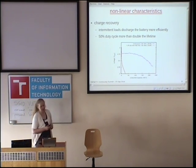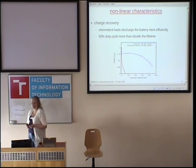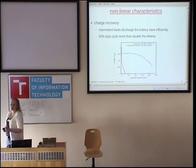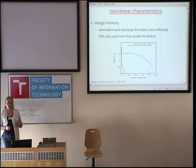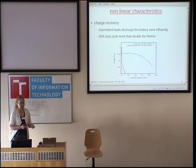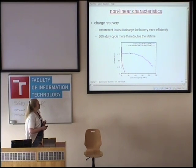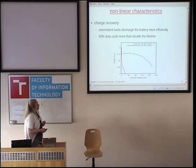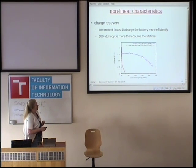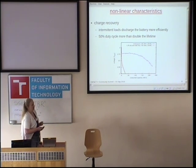The other important nonlinear characteristic is charge recovery: an intermittent load discharges the battery more efficiently. So if you operate your battery on a 50% duty cycle, you will more than double the lifetime. Here you can see discharging the battery continuously at 25 milliamps in red, versus discharging at a 1% duty cycle, where you get a much longer lifetime.